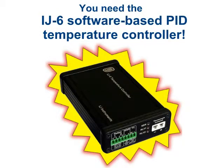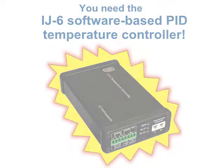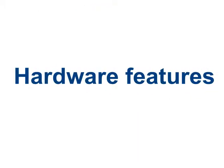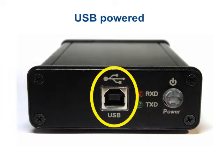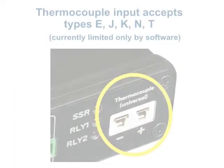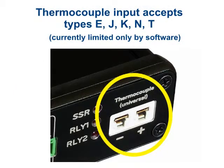You need the IJ6 software-based PID temperature controller. The unit is powered completely from the computer's USB port. It can accept any thermocouple type, but the software currently limits it to E, J, K, N and T, which are the most common variants.